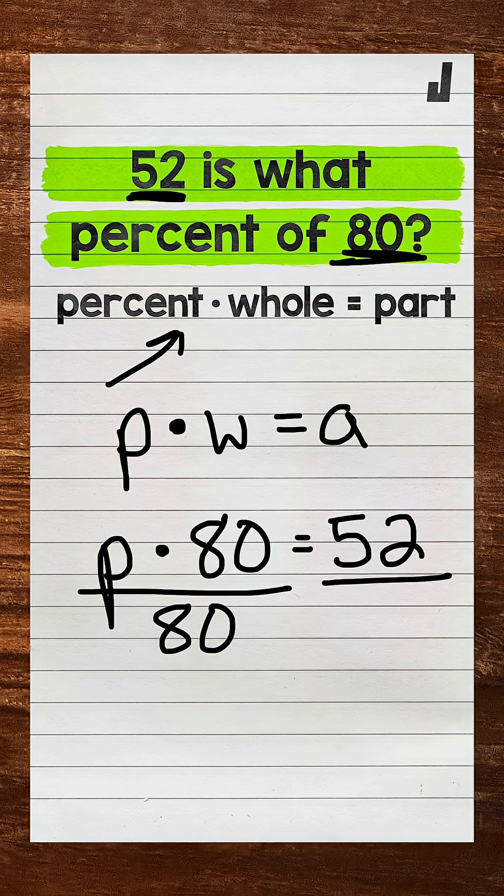Whatever we do to one side of an equation, we must do to the other. So divide the right side by 80 as well. Now the 80s on the left side cancel each other out. So P is now isolated.